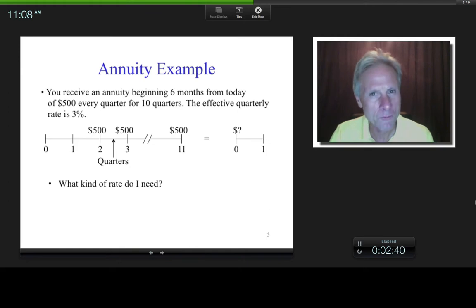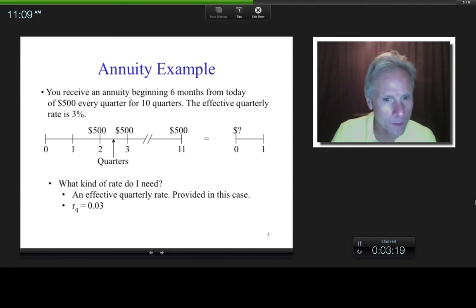Okay, so now these are quarterly periods, so I better be working with what kind of rate when it comes to time value money problems? An effective quarterly rate. And if the effective quarterly rate is 3%, what exactly does that mean? By definition, when it's definitions, it's memorization, not understanding. I've memorized that the sky is called the sky. I don't know why the sky is called the sky. So by definition, if the effective quarterly rate is 3%, it means that $1 grows into how much after one quarter? $1.03. So the amount of interest made from $1 after one period.